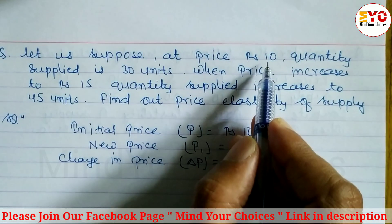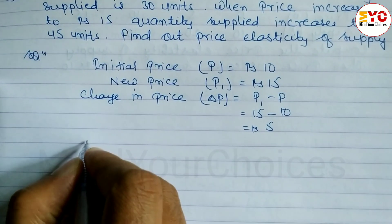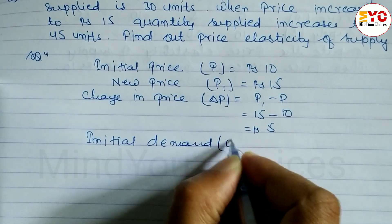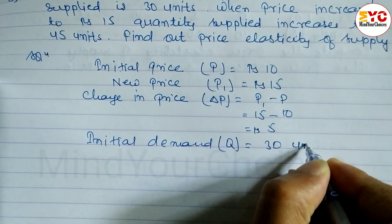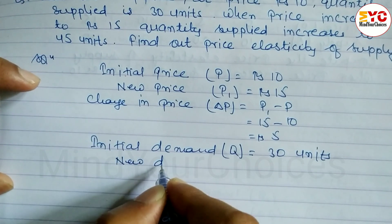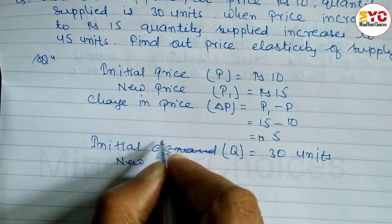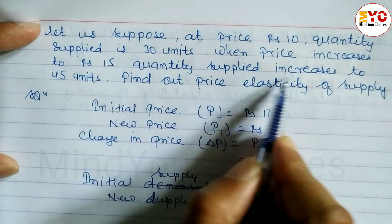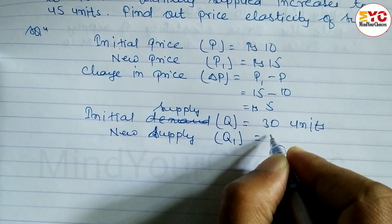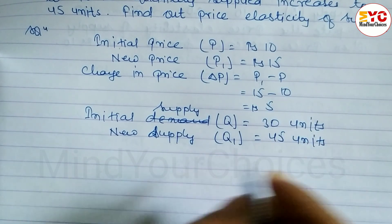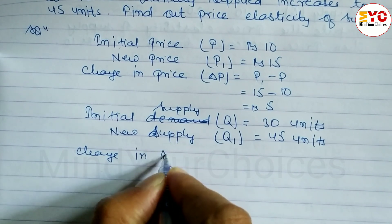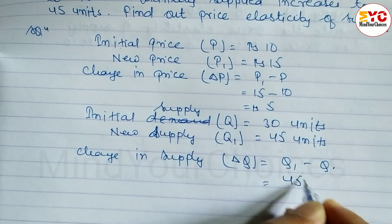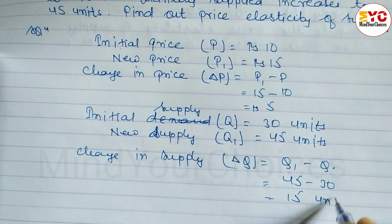When the price is 10, quantity supplied is 30 units, so the initial supply q is equal to 30 units. When the price increases, the new supply q1 is equal to 45 units. The change in supply ΔQ is equal to q1 minus q, which is 45 minus 30, equal to 15 units.